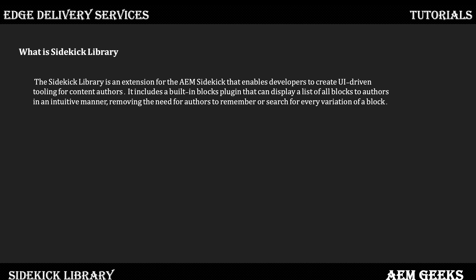Now, you must remember whatever functionality we added to Sidekick during customization through past tutorials — that customization was done through plugins. Each and every functionality, each and every button we added, that was a plugin. Those plugins were already written; we only configured them, except in the last tutorial where we added our own simple console. So here also it's the same — we have a block plugin. This Sidekick library would be configured through the block plugin, which is already written. We only use that. This can be an interview question, so remember: Sidekick library uses the block plugin.